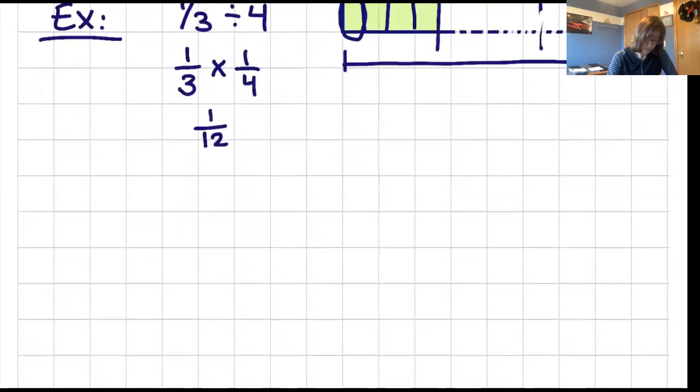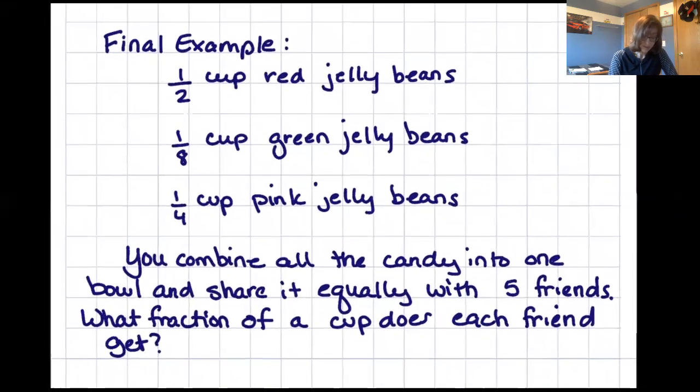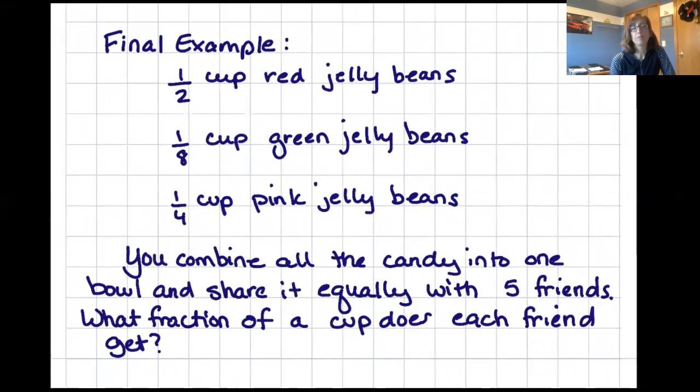Okay, so I have one more little problem right here and then we'll be all done. So this is a multi-step problem. We've got a half a cup of red jelly beans, an eighth of a cup of green jelly beans, and a quarter cup of pink jelly beans. And I'm going to take all these different three colors of jelly beans, pour them into a bowl, mix them up. And then I need to share them with five friends. That's five people I'm sharing it with, not five friends and me. It's just five people. I'm going to divide them up. So I want to know what fraction of a whole cup is each friend going to get?